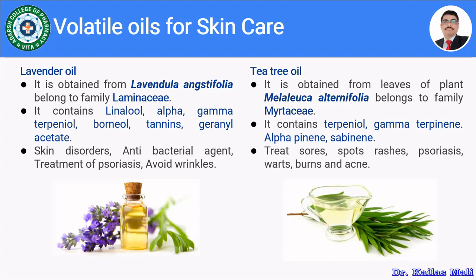Lavender oil is found in so many skin care products. Then the tea tree oil. Tea tree oil is obtained from leaves of Melaleuca alternifolia belonging to family Myrtaceae. It contains mainly terpinen-4-ol, gamma-terpinene, alpha-pinene and sabinene. It is used to treat sores, spots, rashes, psoriasis, burns and acne. The tea tree oil is found in various skin care products.